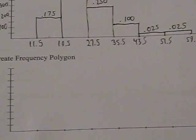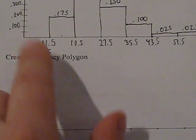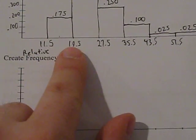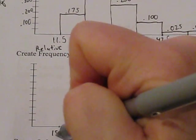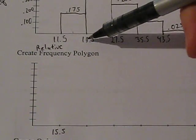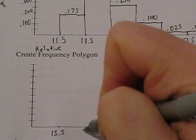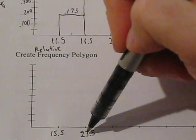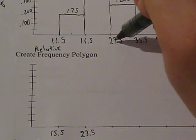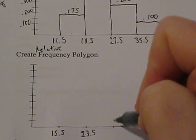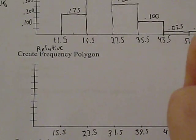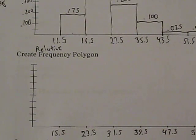Now we're going to create our relative frequency polygon. What we're going to do is take our 11.5 and 19.5, add them together and divide by 2, and we get 15.5. Add 19.5 and 27.5, divide by 2, and we get 23.5. The distance between those is 8. One more: 27.5 plus 35.5 divided by 2 gives 31.5. Now you can take the pattern of adding 8 each time: 39.5, 47.5, and 55.5.